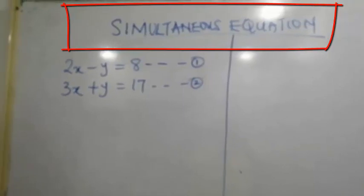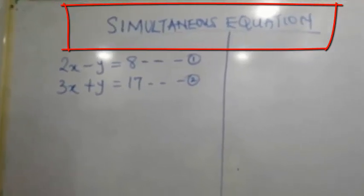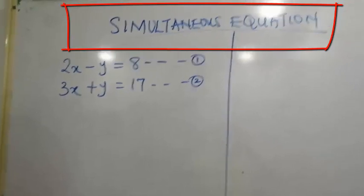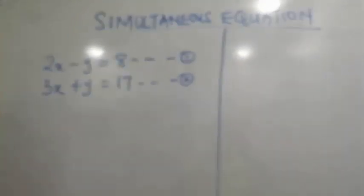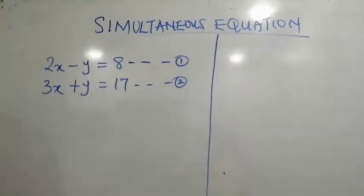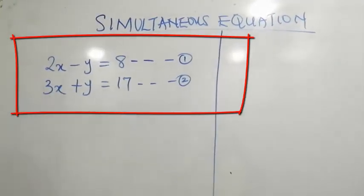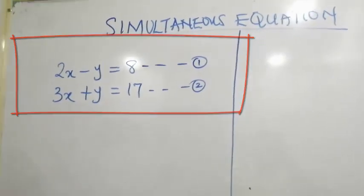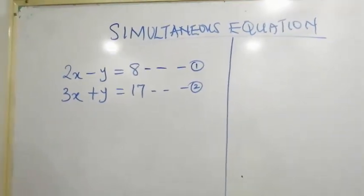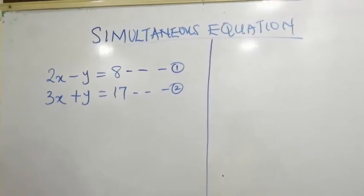When we are talking about simultaneous equations, there are the types of equations that have two or more unknowns. For example, the example we have on the board has two unknowns, x and y. We can also call the unknown variable.